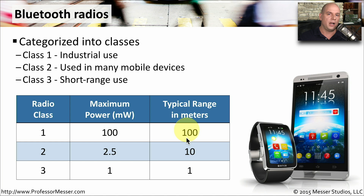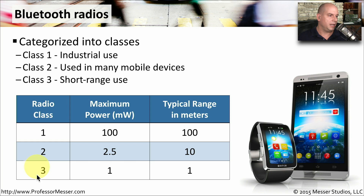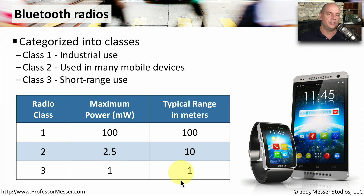It's much more common on our mobile devices to see a class 2, which outputs about 2.5 milliwatts with a range of about 10 meters. For very specialized use, there is the class 3 Bluetooth radio, which allows for a maximum power of 1 milliwatt and extends about 1 meter in distance.